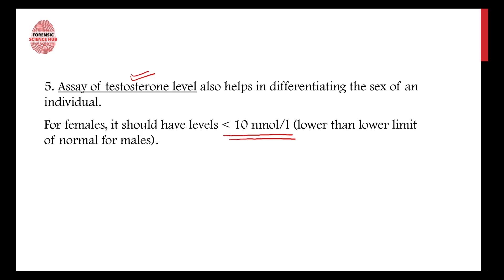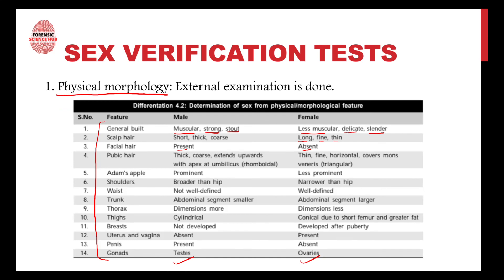Normally, a combination of all these tests is carried out for determining the sex of a person. However, certain disorders of sexual development always act as a problem in the sex verification test. As we know, the sex chromosome is not always XX or XY — it can be XXY or XO. All these abnormalities in sexual development act as a problem in the sex verification test.